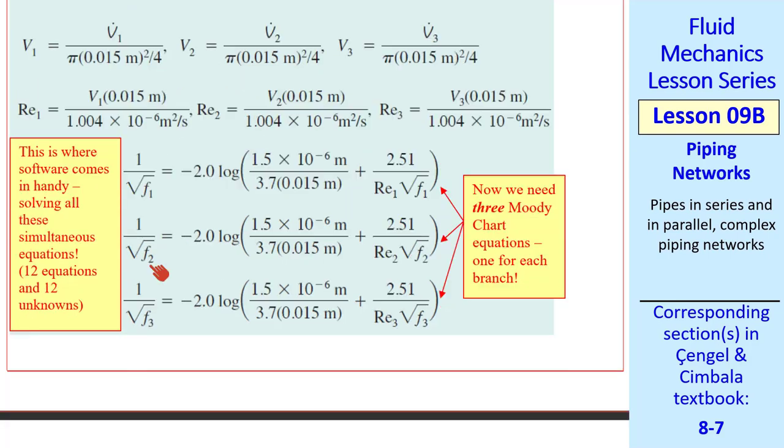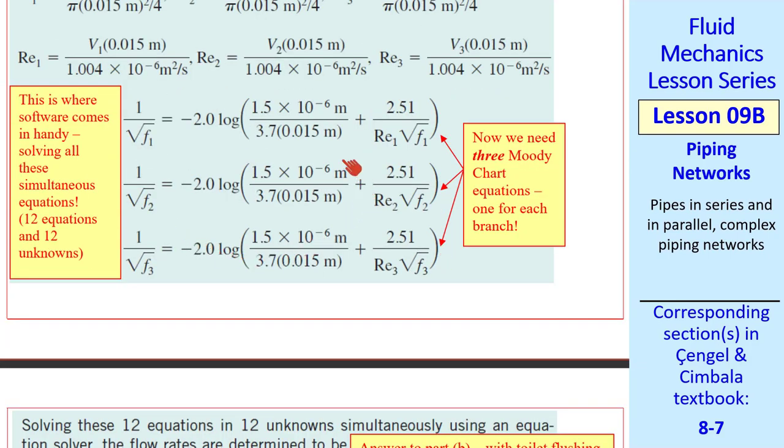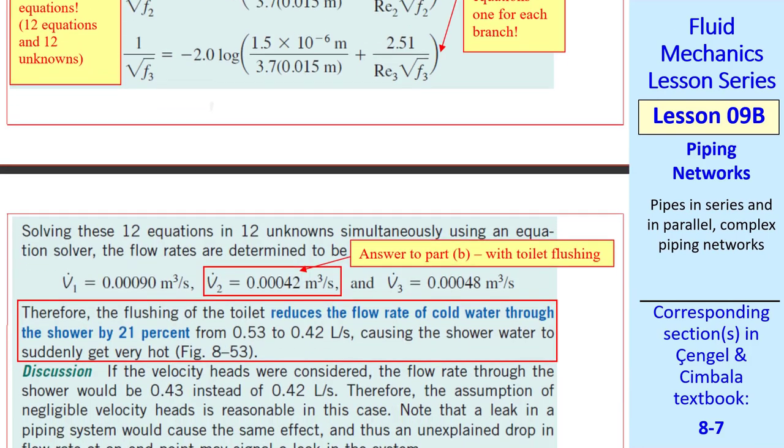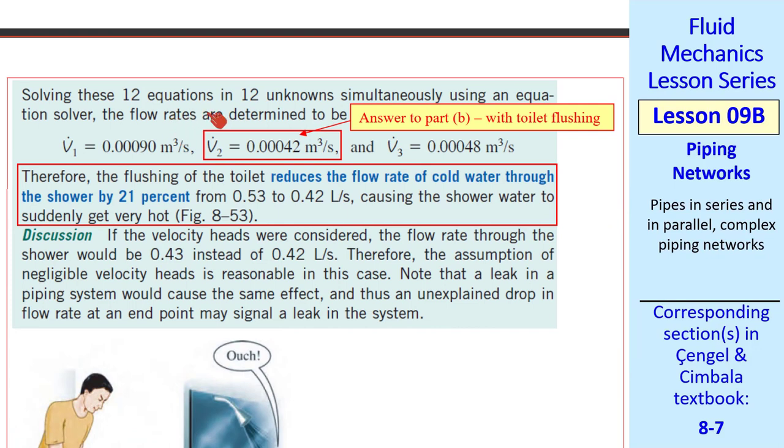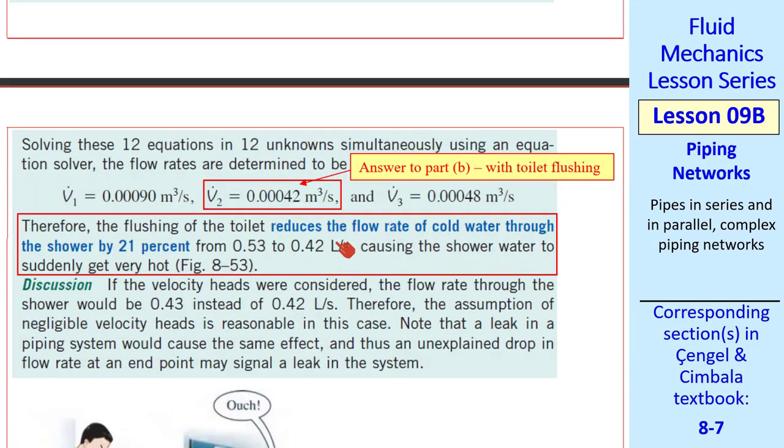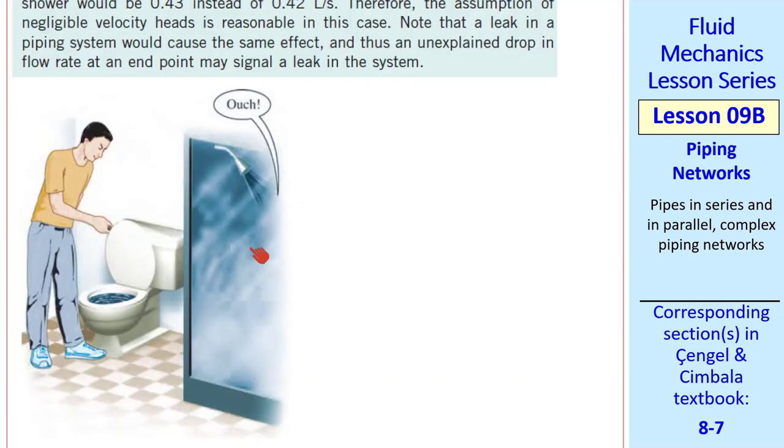The differences are minor. We end up with 12 equations and 12 unknowns, which we have to solve simultaneously. The final result is that the cold water through the shower is reduced by 21%, from 0.53 to 0.42 liters per second, causing the shower to get very hot, which we show here.